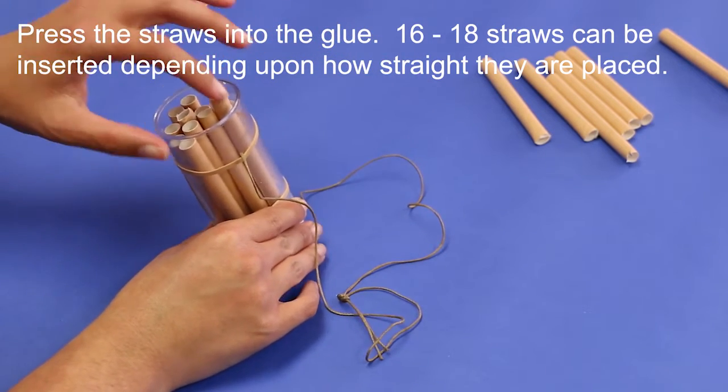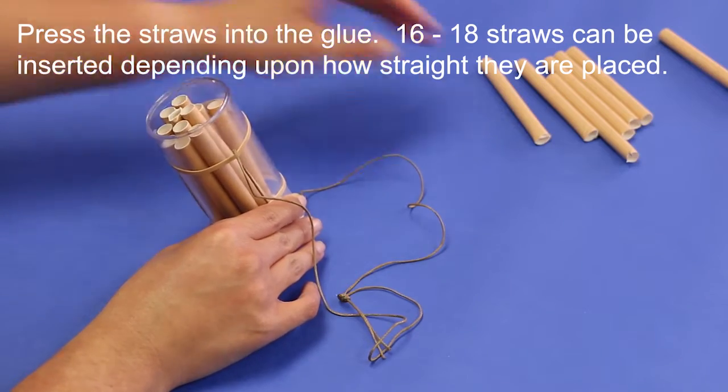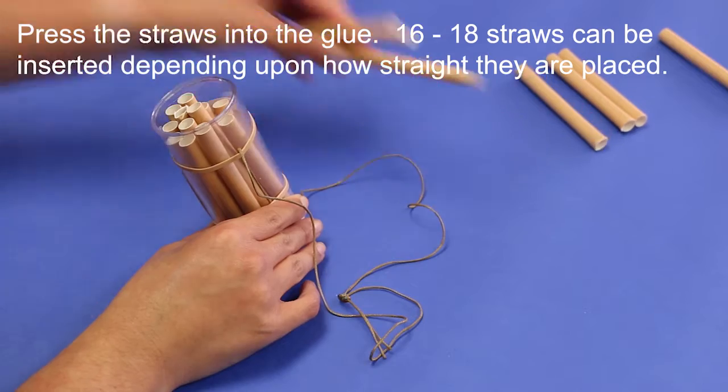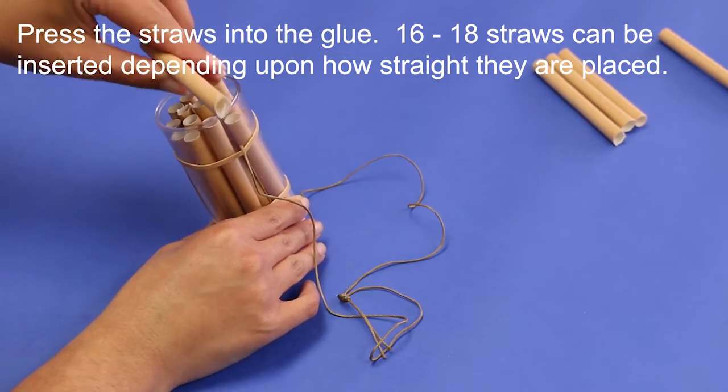Keeping them straight helps provide space for as many straws as can fit. Depending on how straight the straws are, you might get anywhere from 16 to 18 into the tube.